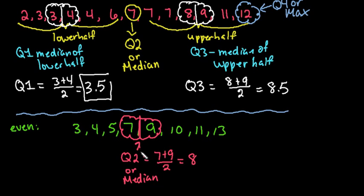Because we split it directly in half, this would be our lower half. So we would use all four of these values as our lower half, including the 7. So our Q1 would be the average of 4 and 5, which would be 4.5.